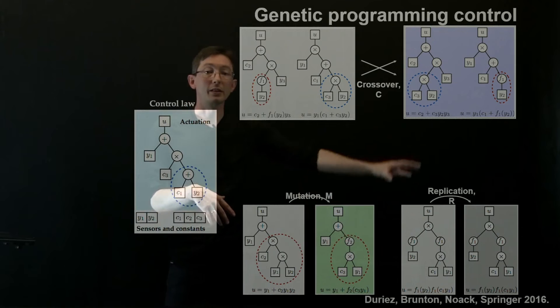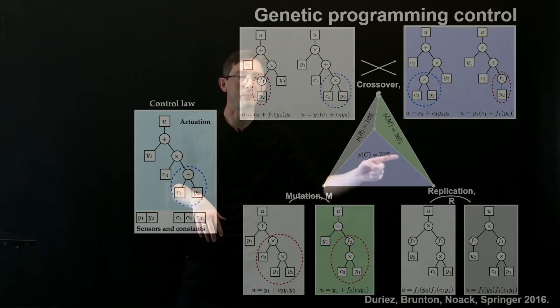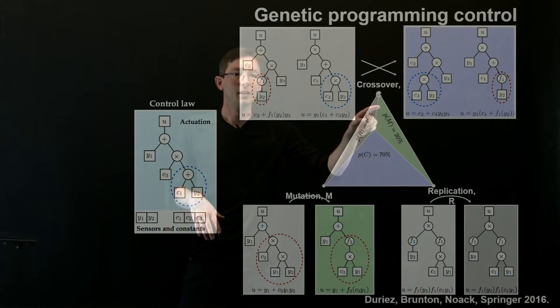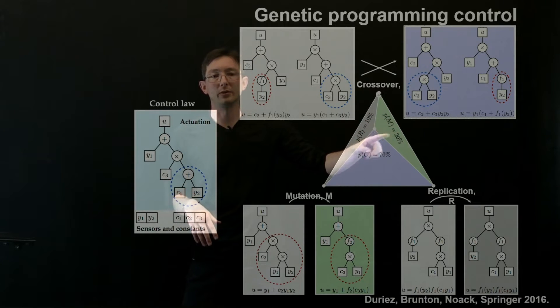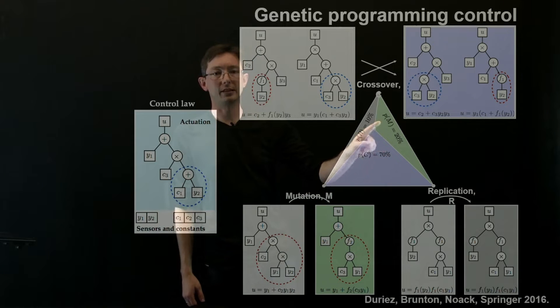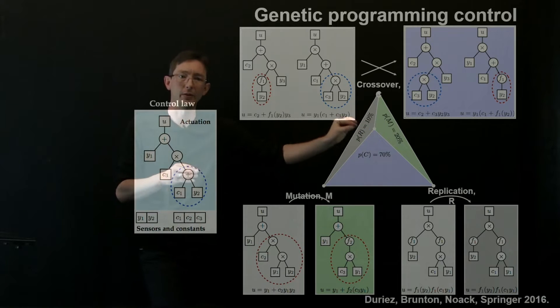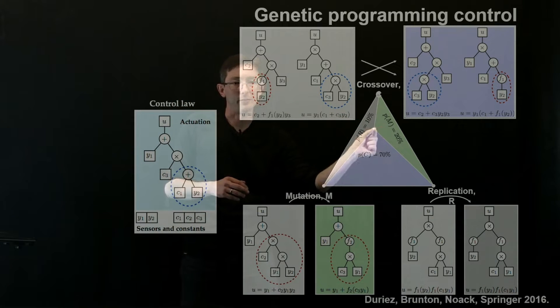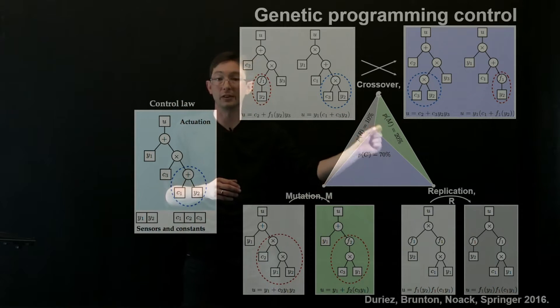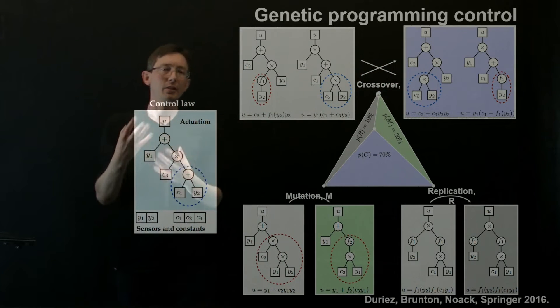So this is how genetic programming works in general. And as before you have to pick these basic probabilities of probabilities of replication, mutation, and crossover. In this case I've chosen crossover at 70%, replication at 10%, and mutation at 20%. But you can kind of play with those numbers, you can move this point and change the volume of these triangles to get more crossover or more mutation or more replication.